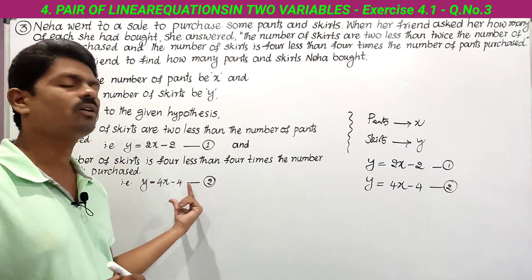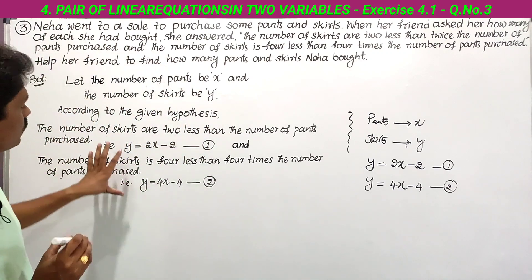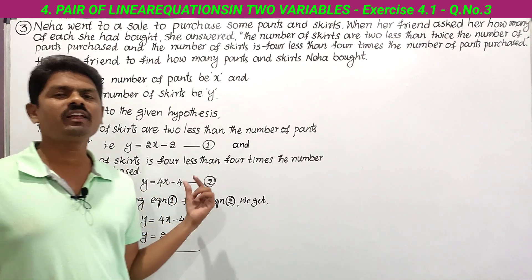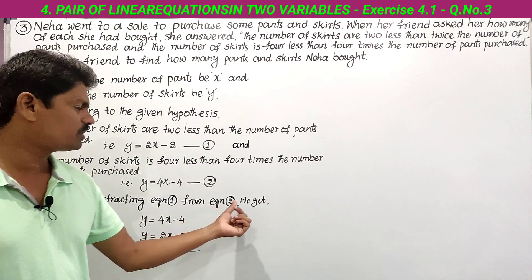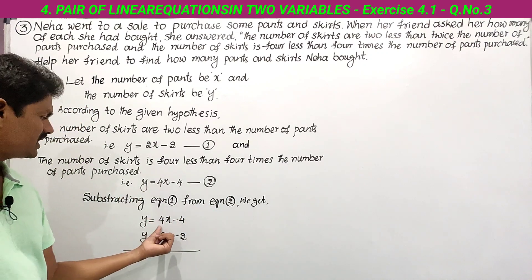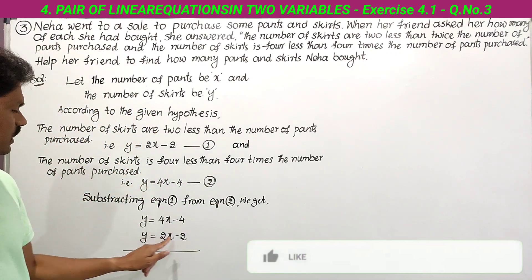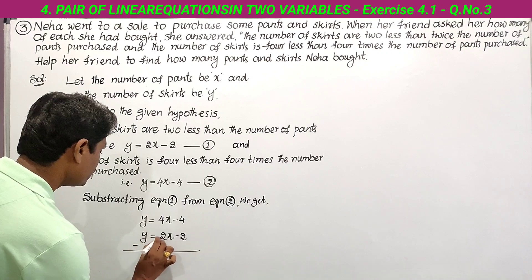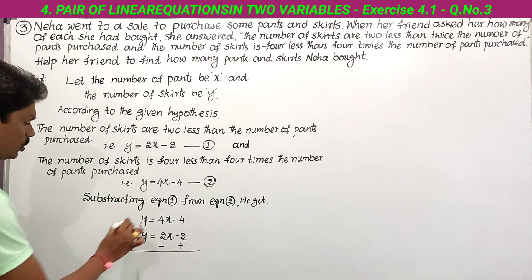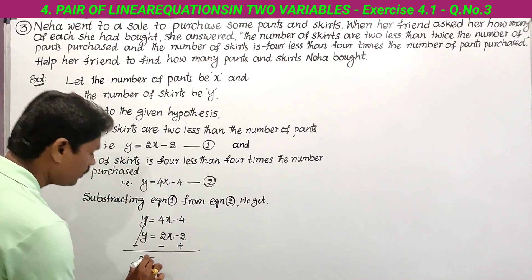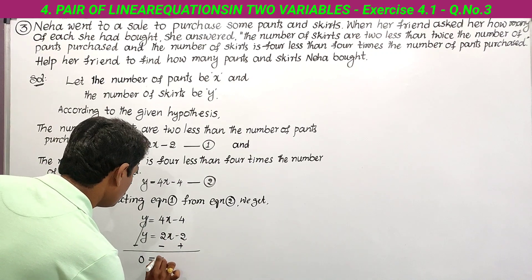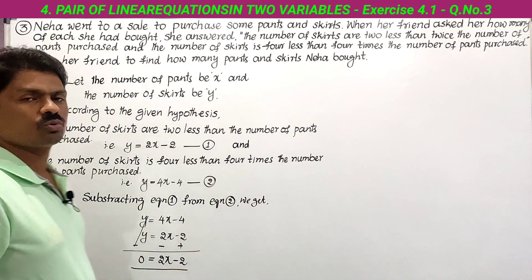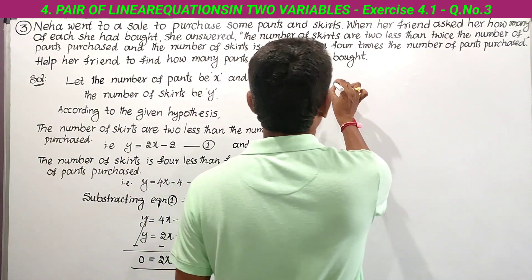Now to solve these two equations, we subtract Equation 1 from Equation 2. Write Equation 2: y = 4x − 4; write Equation 1: y = 2x − 2. Upon subtraction, signs change — plus becomes minus, minus becomes plus. So: y − y = 0, and 4x − 2x = 2x, and −4 + 2 = −2. This gives us 2x − 2 = 0. Taking −2 to the left side: 2x = 2.